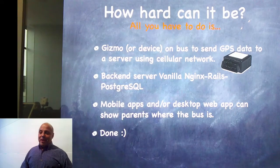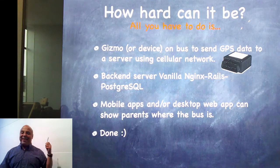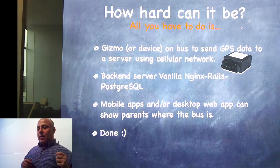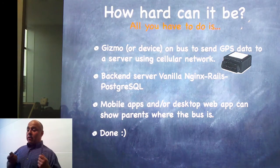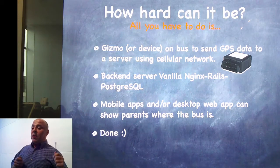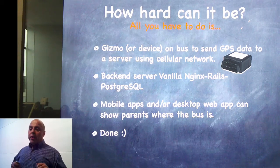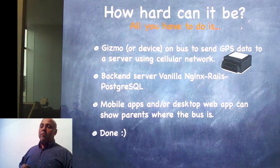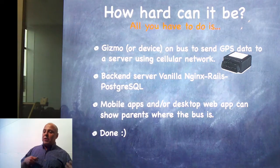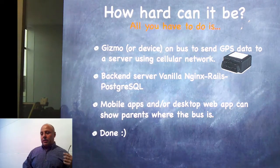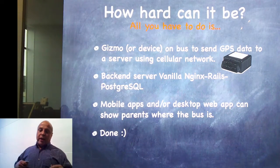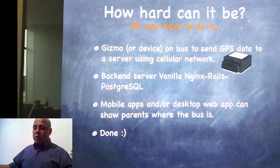So I asked, how hard can it be? All you have to do is get yourself a gizmo — a GPS receiver that also happens to have a cellular network radio — and the server side is going to be your vanilla Nginx, Rails, Postgres, and the mobile apps needed on the client side, whether Android, iOS, Windows Phone, or BlackBerry.